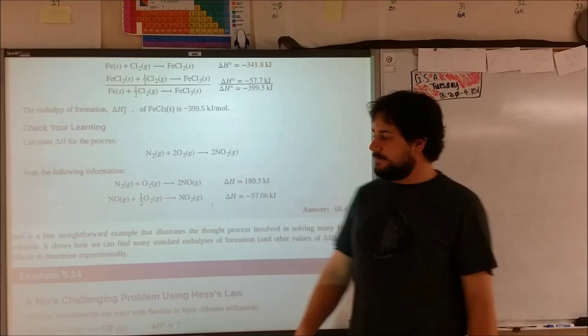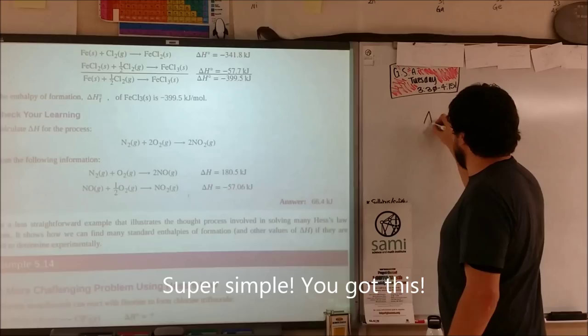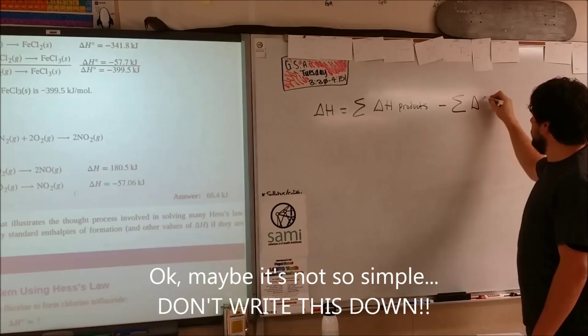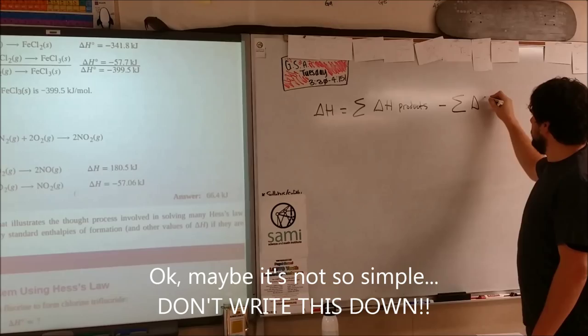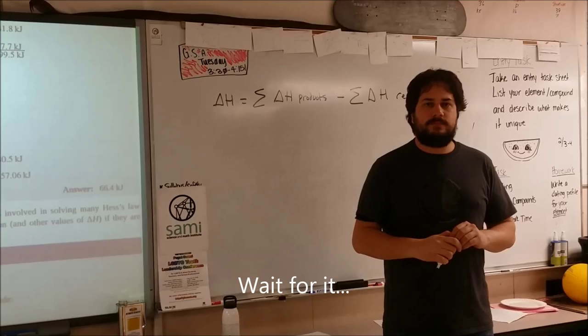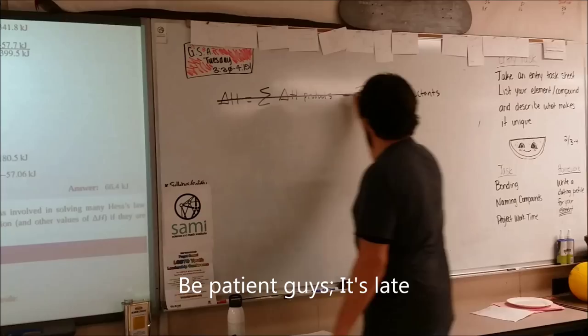The change in H for the first half reaction — N2 plus O2 to 2NO — is 180.5 kilojoules. The change in delta H for the second reaction is negative 57.06 kilojoules. Which one is going to feel cold on your hand? The formation of the NO, because it has a positive value — it's increasing the heat and therefore taking it from your hand. And with the negative value for NO2 formation, it's producing heat out. But we want to know overall: is it taking in heat or producing heat?